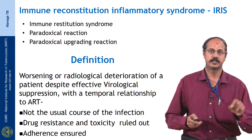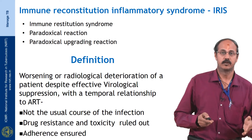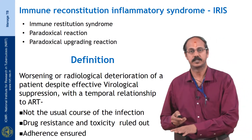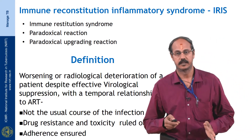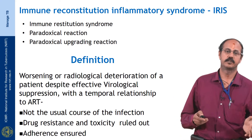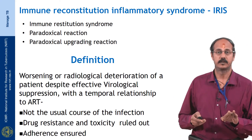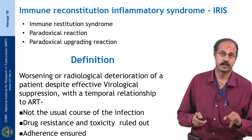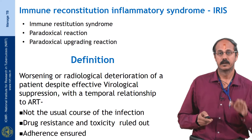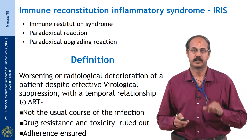For IRIS diagnosis, there must be effective virological suppression with a reduced viral load of at least 0.5 to 1 log, yet the patient has worsening symptoms or radiological deterioration. This cannot be explained by the usual course of infections. Three important mimics must be ruled out: non-adherence, drug toxicity, and most importantly, emergence of drug resistance.